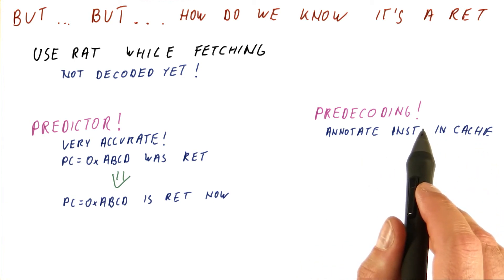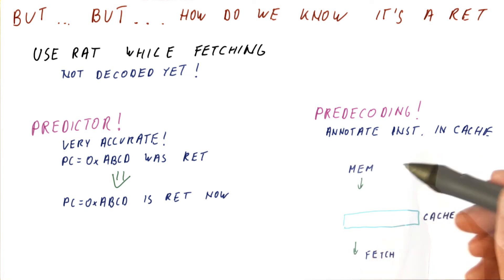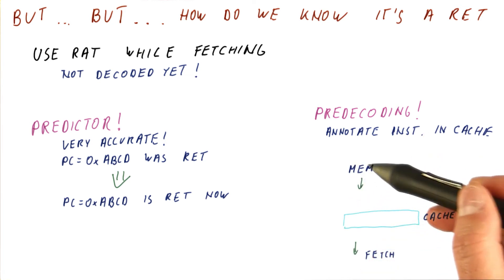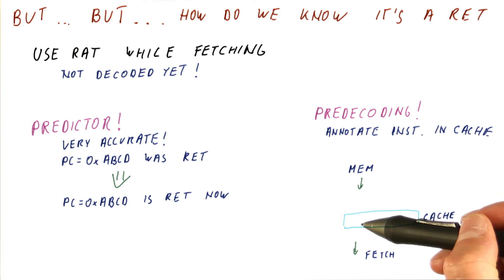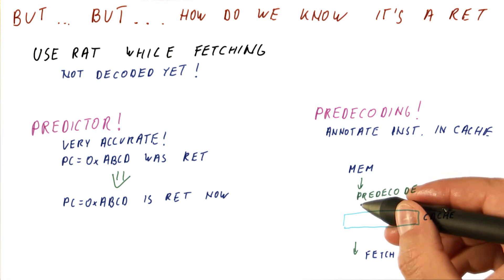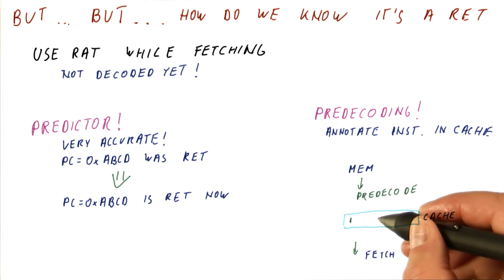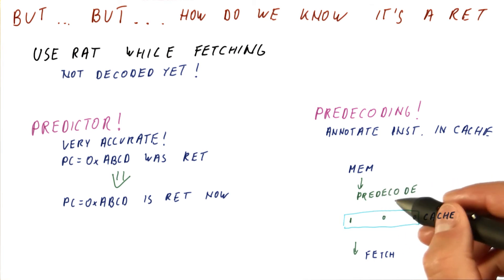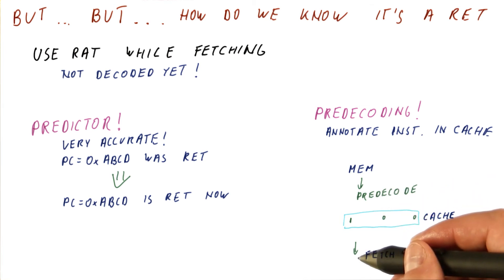So pretty much my memory will, for example, have 32-bit instructions. In my cache, I will store 33 bits per instruction, 32 bits of the actual instruction, and one bit that tells me whether the instruction is a return or not. So the idea is that as the instruction is coming from memory and we put it to cache, we can be pre-decoding instructions, keeping some additional bits in the cache about the pre-decoding of the instruction so that when we fetch, we already know that information.